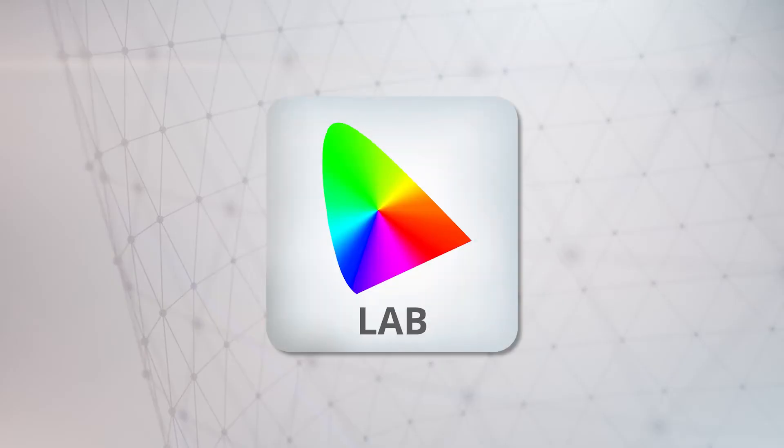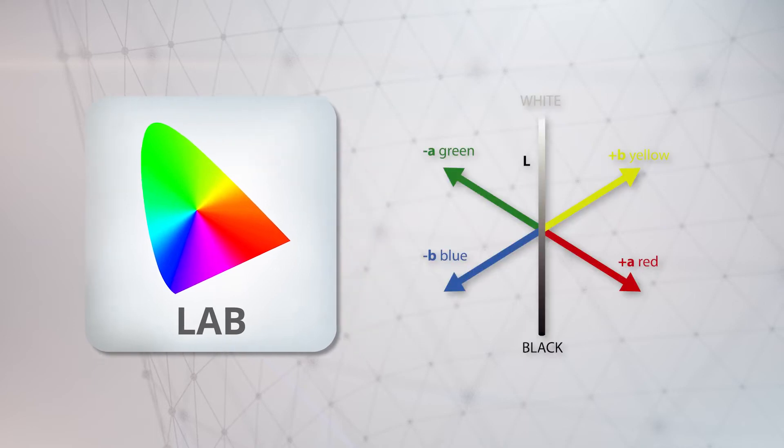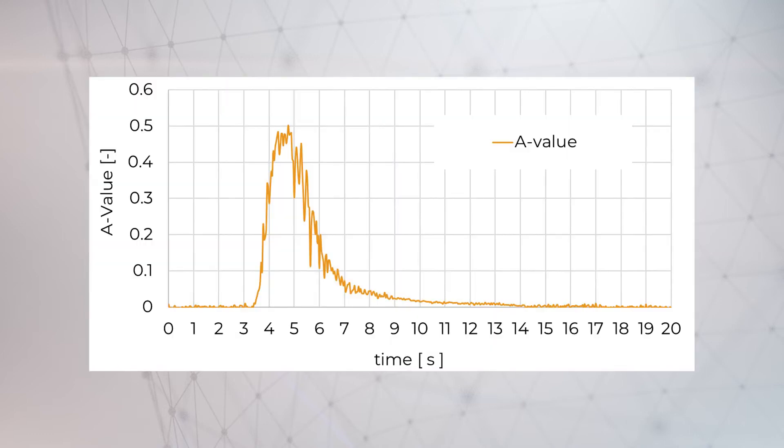We evaluated the video using the LAB color room. Specifically the A value, which describes the redness of the picture. Here you see the RTD curve resulting from this test. The fluctuation of the curve is quite strong. This is a common effect for this type of test, but still the results are usually quite reliable.